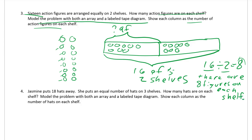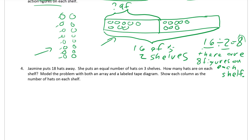You're going to have all of that: the array, the tape diagram, the answer statement, and the equation — you have to have all of that and all the labels. Problem four: Jasmine puts 18 hats away. She puts an equal number of hats on three shelves. How many hats are on each shelf? Model the problem with both an array and a labeled tape diagram. Show each column as the number of hats on each shelf.